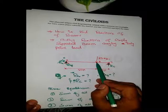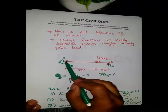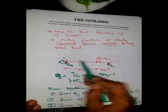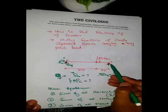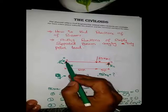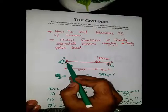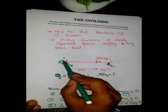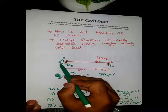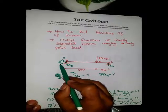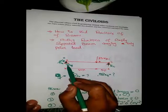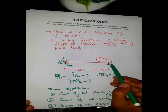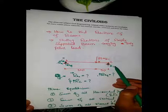We have a simply supported beam with a length of 15 feet, carrying a point load at a distance of 10 feet from the left support. The left support is named A and the right support is C. Support C is a roller support, and support A is a hinge support. At a hinge support there are always two reaction components: one horizontal and one vertical.